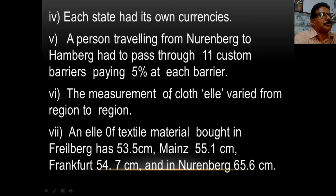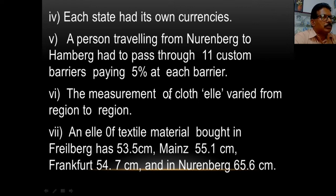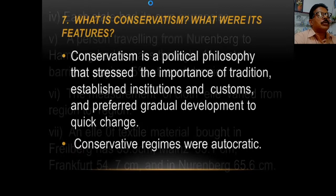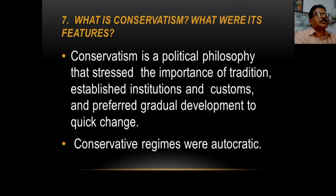This is a very important CBSE question: what conditions were viewed as obstacles by the new commercial class? There were no uniform weights and measures, each state had its own currency, there were no free markets, there were custom barriers — all this affected doing business very badly. Let us come to the next question.